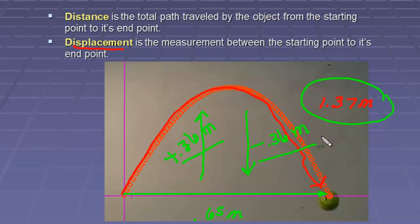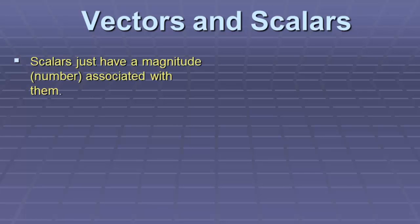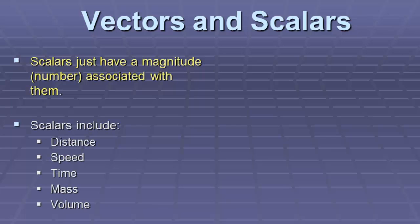Let's take a look again at what these things mean. Specifically, we're talking about vectors and scalars. Scalars just have a magnitude or a number associated with them. Scalars include things like distance, speed, time, mass, and volume.